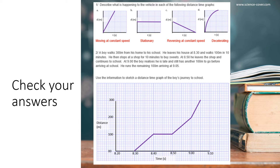Let's check our answers. Number one: describe what is happening to the vehicle in each of the following distance time graphs. In A, we can see an object moving at constant speed. In B, it is a stationary object. In C, it's reversing at constant speed. And in D, we have an object decelerating.